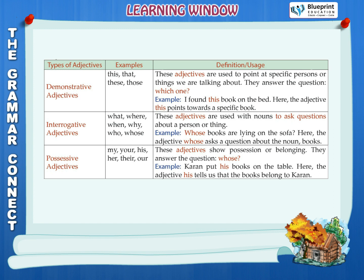Demonstrative adjectives — examples: this, that, these, those. These adjectives are used to point at specific persons or things we are talking about. They answer the question: which one? Example: I found this book on the bed — here the adjective 'this' points towards a specific book.